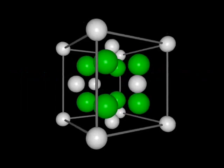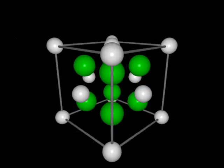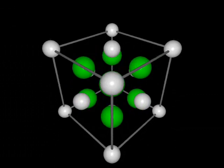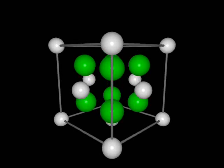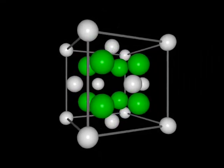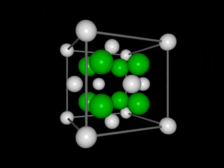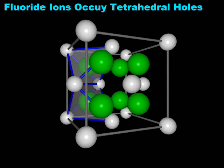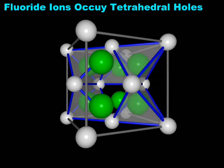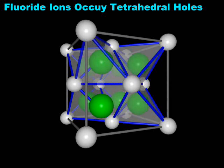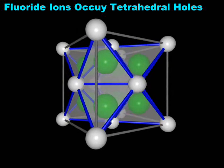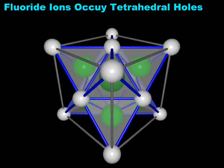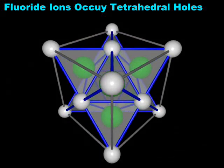A second ionic structure based upon a face-centered cubic lattice is the fluorite structure. Fluorite is the mineral calcium fluoride. In the fluorite structure, the calcium ions, represented here by the white spheres, form a face-centered cubic array. The fluoride ions, represented by the green spheres, occupy the tetrahedral holes. Each fluoride ion lies at the center of a tetrahedron of calcium ions. Since an array of N close-packed ions gives two N tetrahedral holes, and since there are two fluoride ions for every one calcium ion, all of the tetrahedral holes are filled.